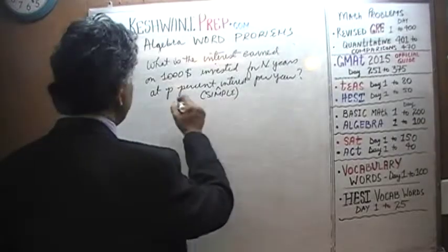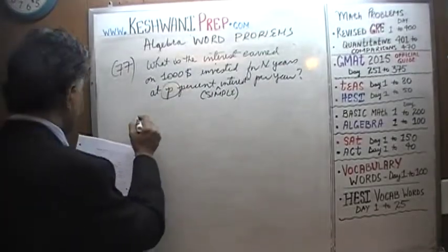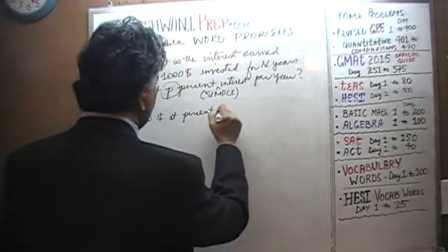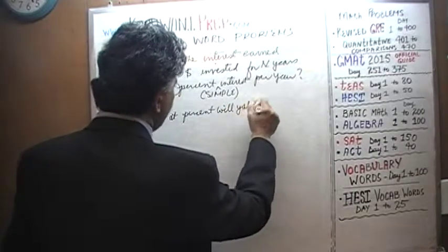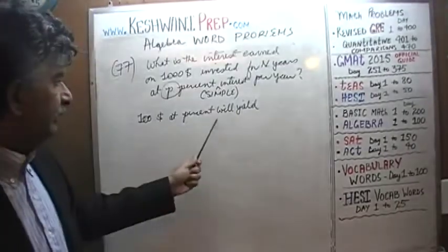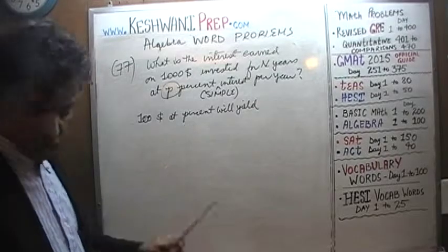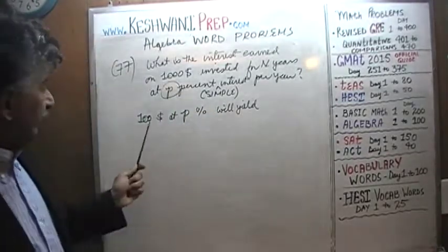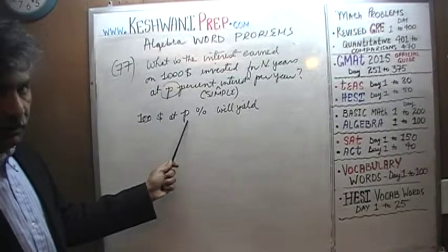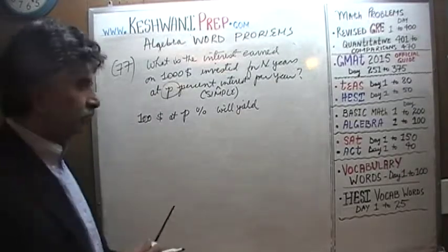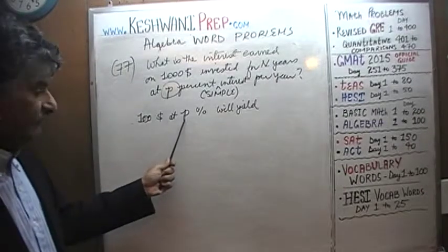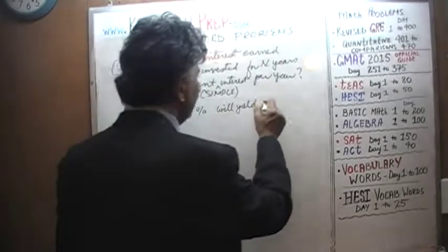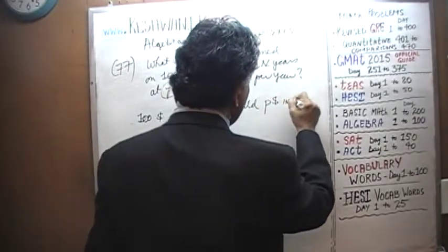We know that we are going to earn P%. If we were to invest $100 at P%, how much will that yield? For example, $100 at 3% yields $3 interest. $100 invested at 7% gives us $7 in one year. $100 invested at 20% gives us $20. So $100 invested at P% will yield P dollars in one year.